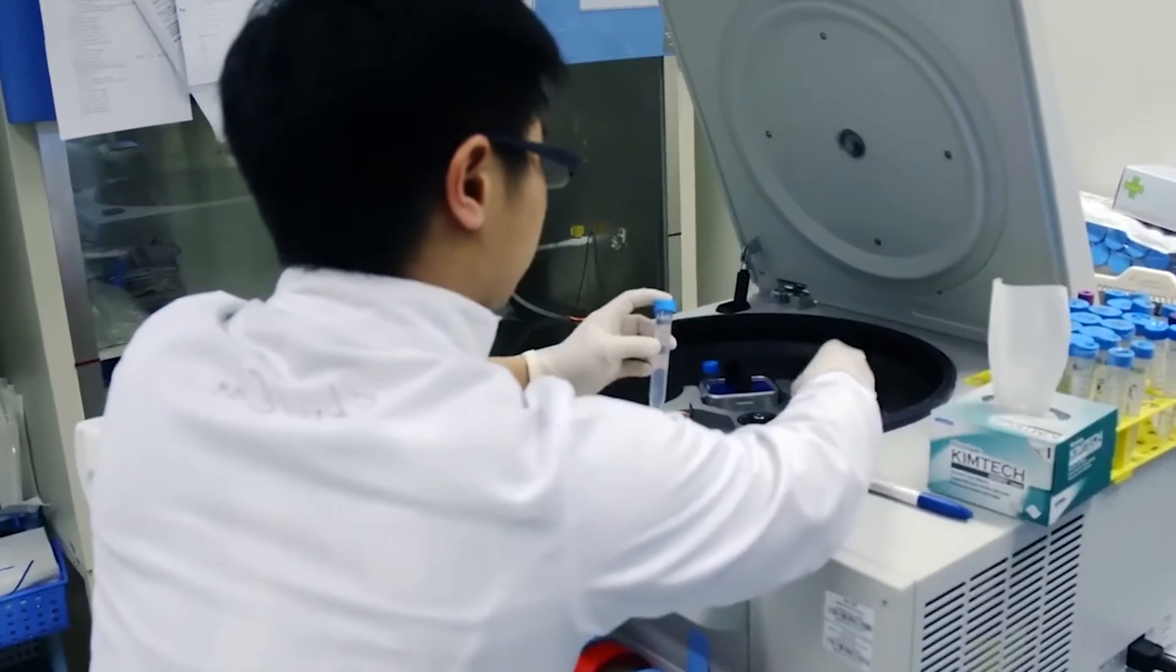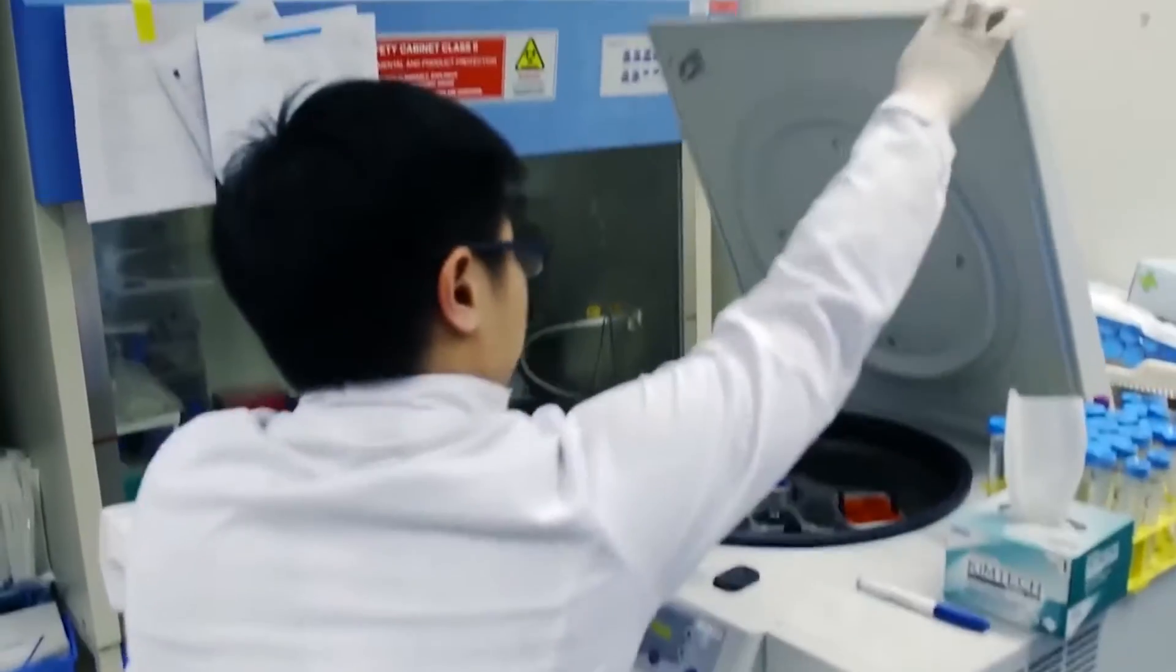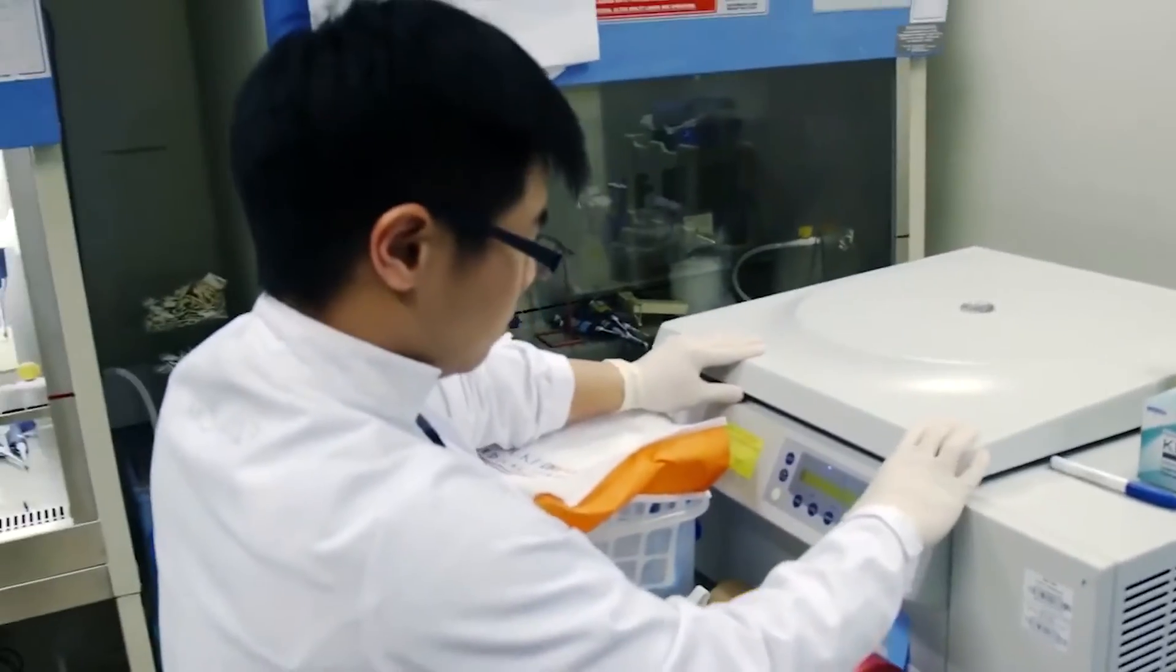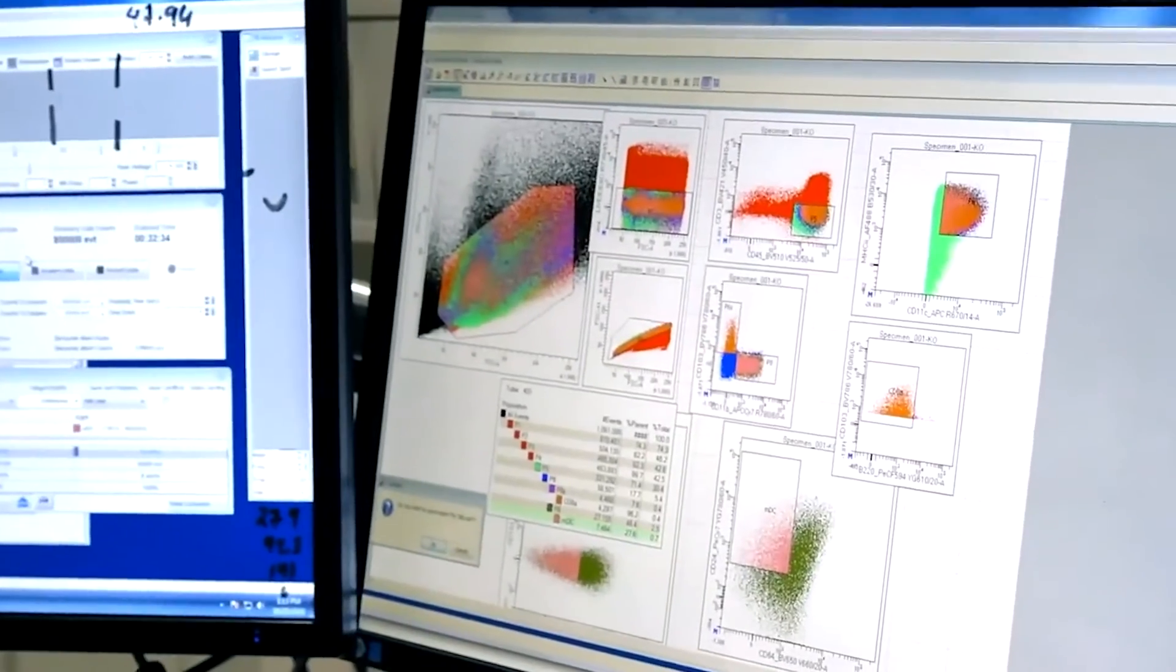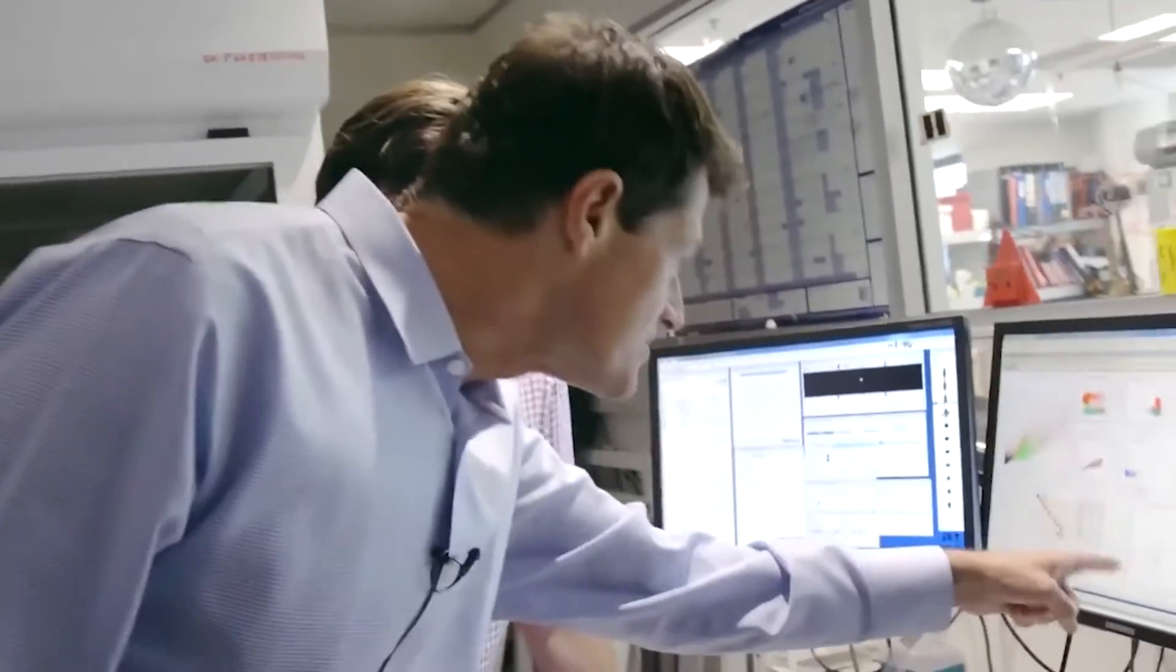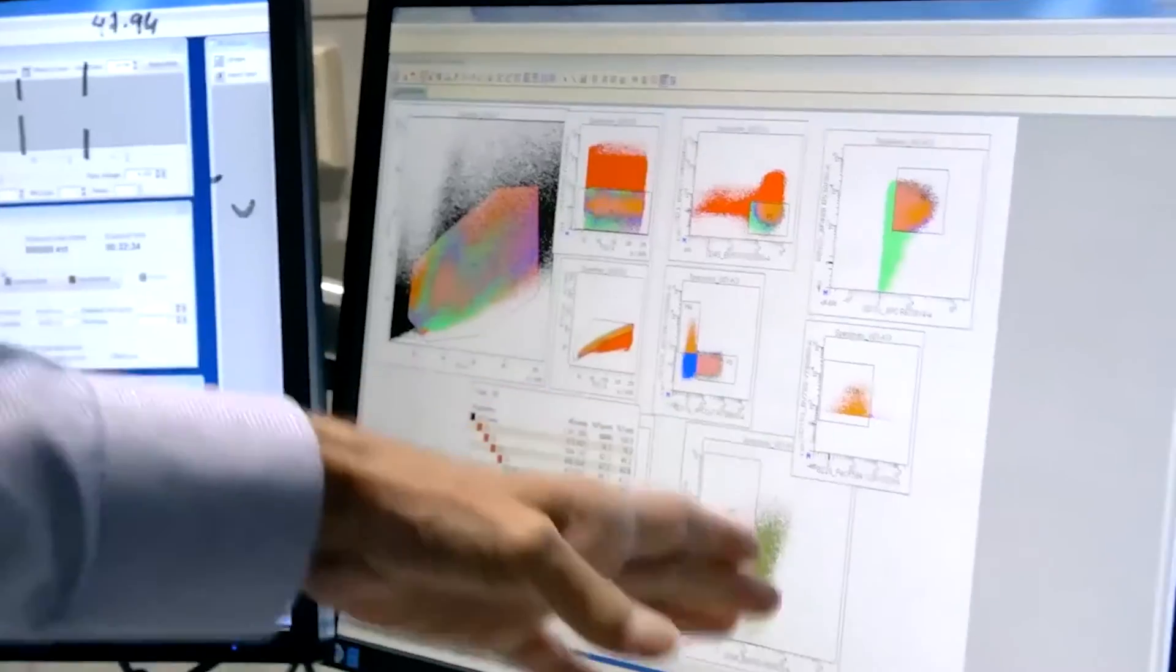Flow cytometry is the most powerful tool to objectively measure molecules and how many molecules are present on individual cells. Each of those dots on the screen is one cell that's whizzed through the laser beam. It's incredibly deep because you can measure millions of cells in 10 minutes.